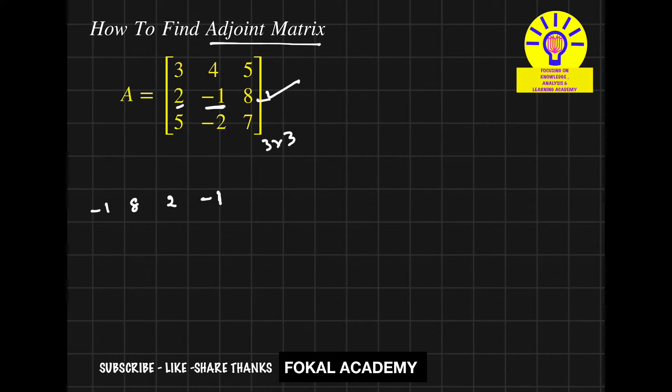Now similar process apply for third row. And it becomes minus 2, 7, 5, minus 2.